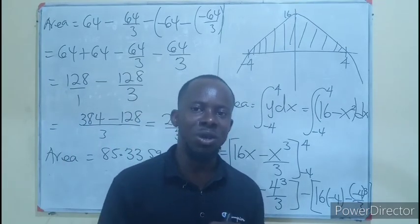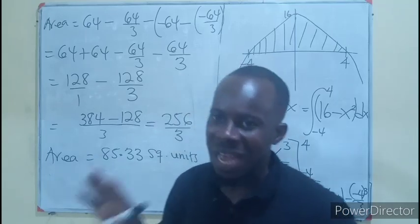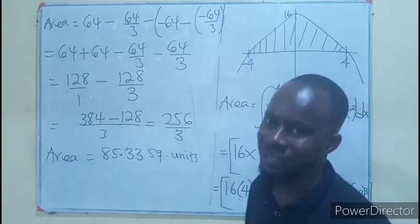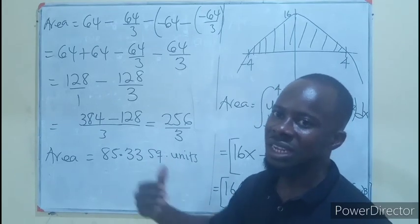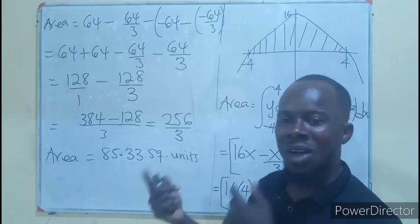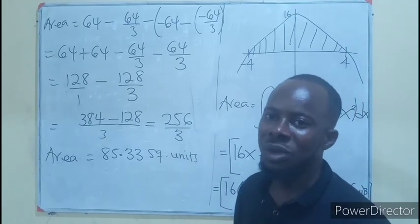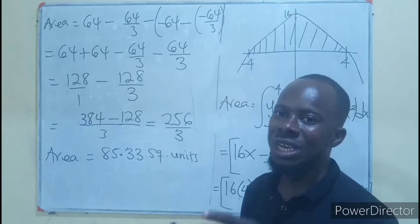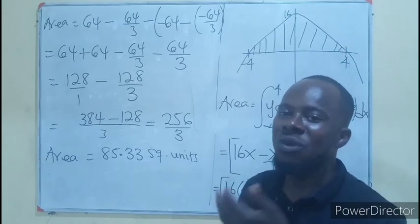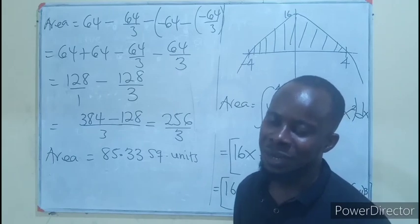So in finding the area bounded by a curve and the x axis, we can also be given the x axis without its coordinate. Then finding the intercept can help us find the coordinate which is the limit of integration. In our next episode, we will be finding the area between 2 curves. If the curves are 2, how do we find the area bounded by them?